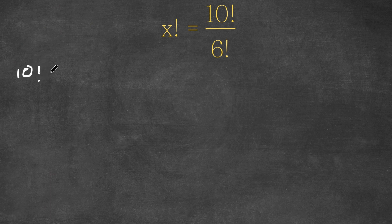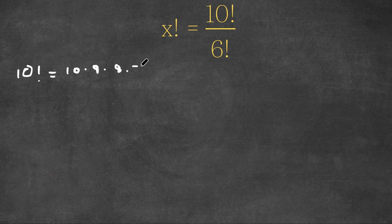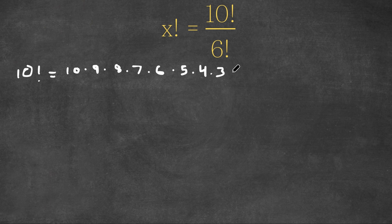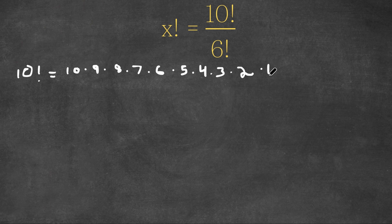This is equal to 10 times 9 times 8 times 7 times 6 times 5 times 4 times 3 times 2 times 1. So it's equal to 10 multiplied by n minus 1 all the way up to 1.